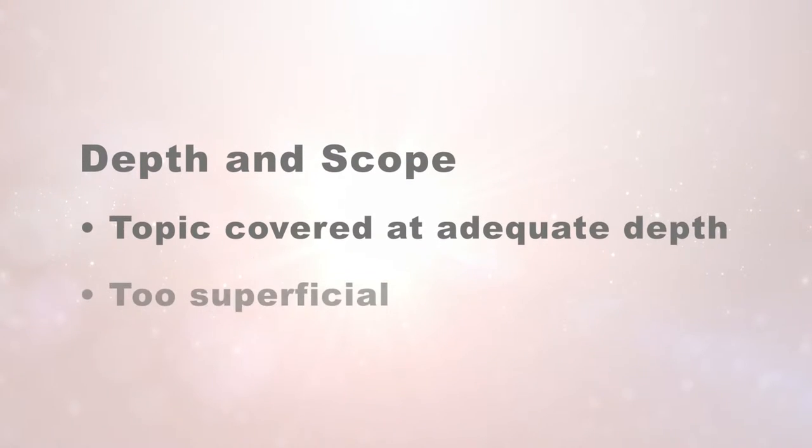Depth and scope of coverage is another criteria to consider. Is this topic covered at adequate depth, or is it too superficial? For example, I had a student once write a paper with a faculty member and the paper was rejected. When she showed me the paper, it was clear why — the paper tried to cover four topics instead of just focusing on one, and each of the four topics was covered in a very superficial way, which was not appropriate for the advanced practice audience. So be sure you have adequate depth and scope of coverage for your topic that matches the needs of the intended audience.